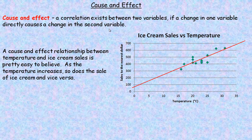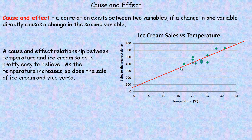You change one thing, it causes something else — another variable — to change. A fairly simple example of a cause and effect relationship is the sale of ice cream versus temperature. The higher the temperature, the more ice cream is sold; the lower the temperature, the less ice cream is sold. The line of best fit is definitely trending upward, so it's a positive correlation. As the temperature increases, so does the sale of ice cream, and vice versa.